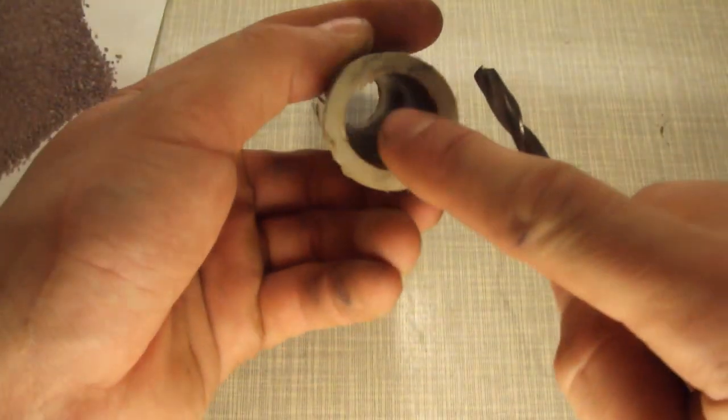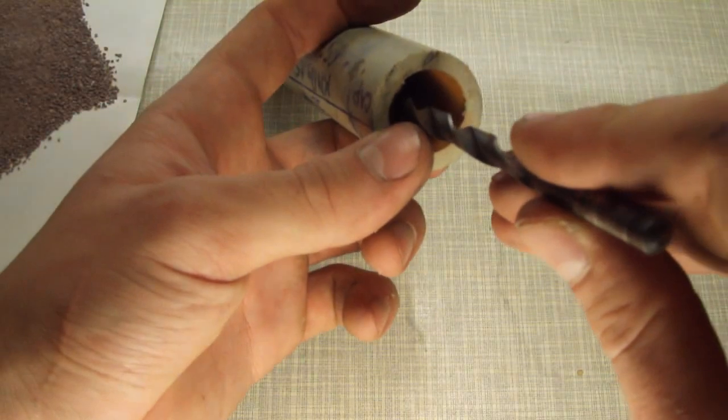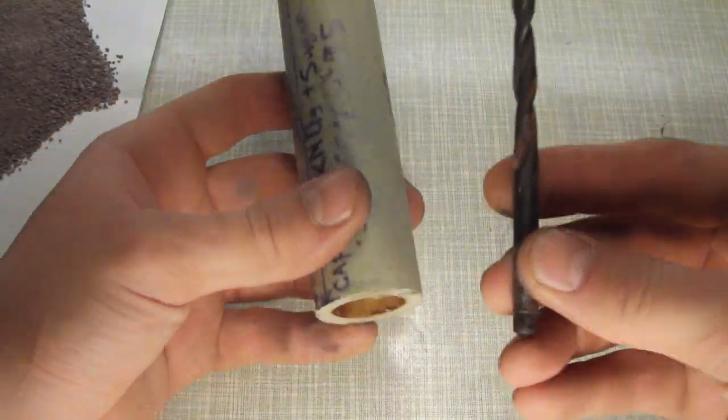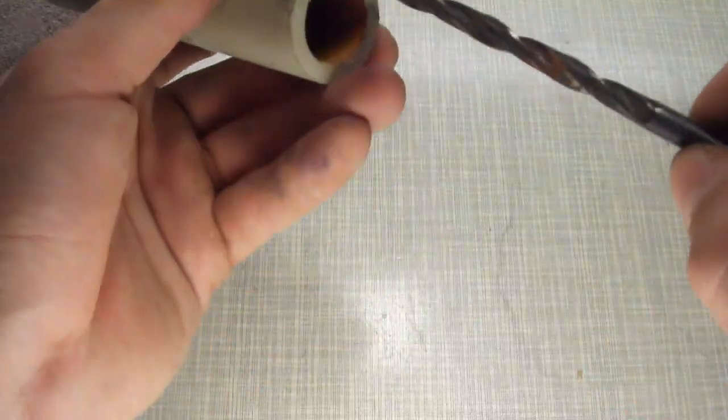After this we need to drill from this side, exactly in the center, a hole with a 6-7mm bit. Ideally through the entire length of the fuel mixture. My bit reaches almost the full length. We drill the hole and insert the fuse.